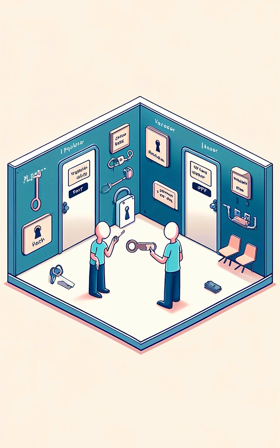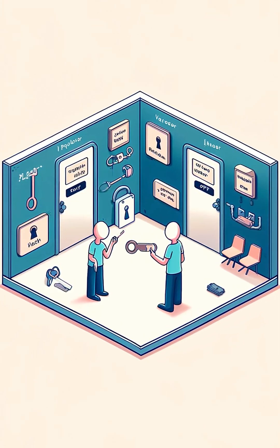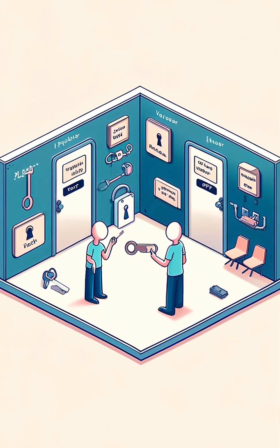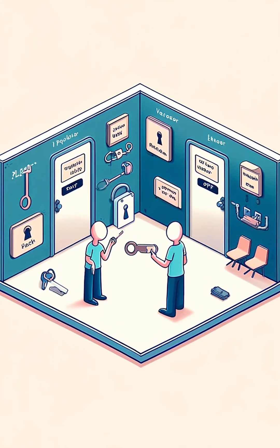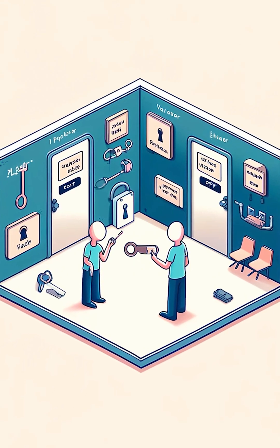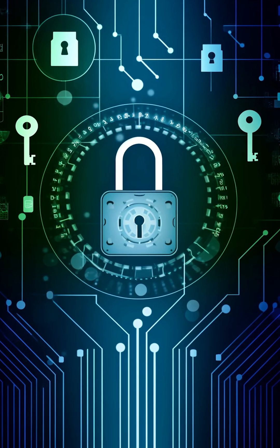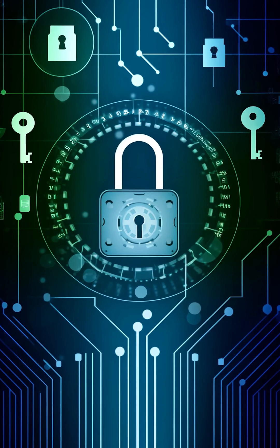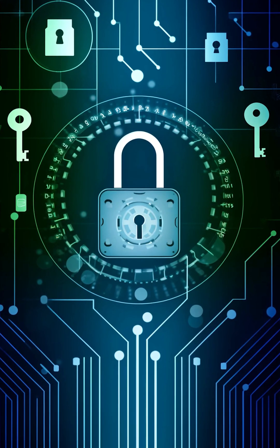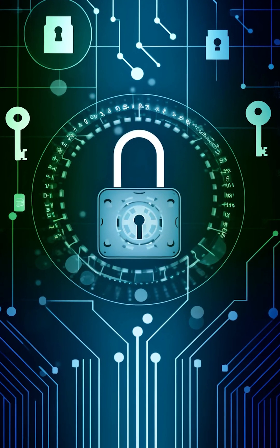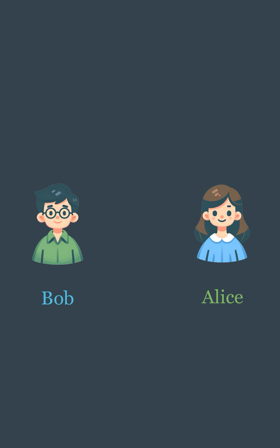A zero-knowledge proof is a method by which one party can prove to another party that they know a specific piece of secret information without revealing the information itself. This concept is crucial in fields like cryptography, where it's important to validate knowledge or permissions without exposing sensitive data. To understand this better, imagine Alice has a unique key that can unlock a special lock. Bob, however, doesn't want to see the key itself, but needs proof that Alice has it.